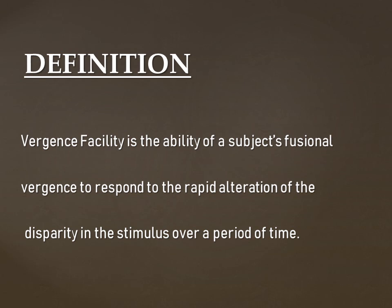Now we know that whenever we are looking at a near target, our eyes converge because the bitemporal retinal image disparity takes place, which can be overcome by the positive fusional vergence or convergence, because that stimulates the corresponding retinal points which helps us to retain binocular single vision at near. We can get a single visual perception of that object at near because of convergence.